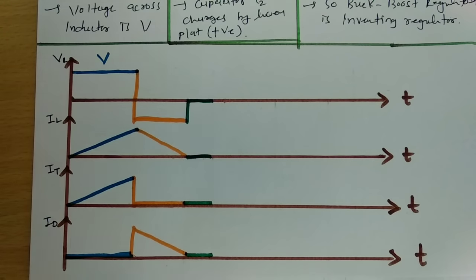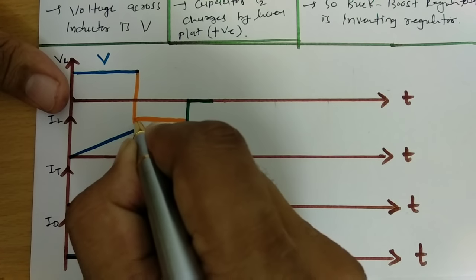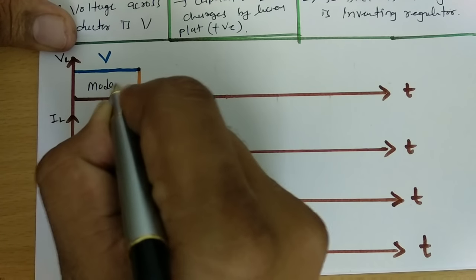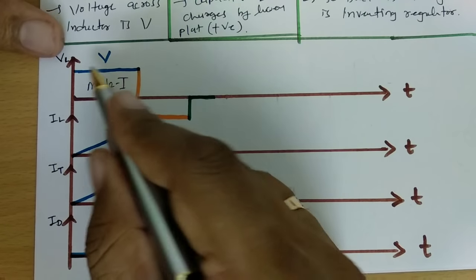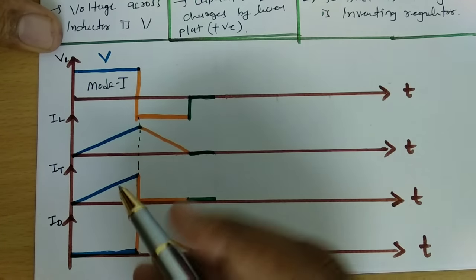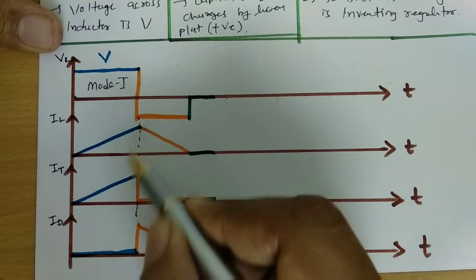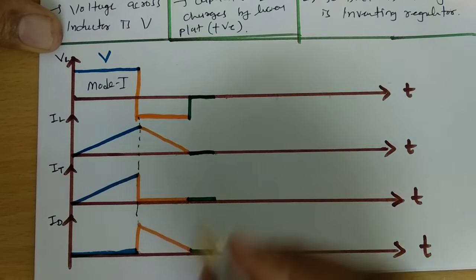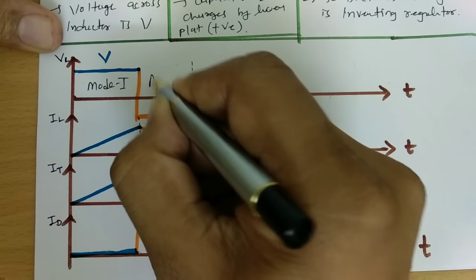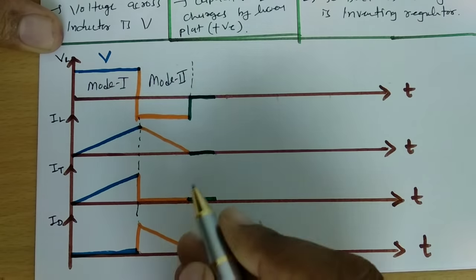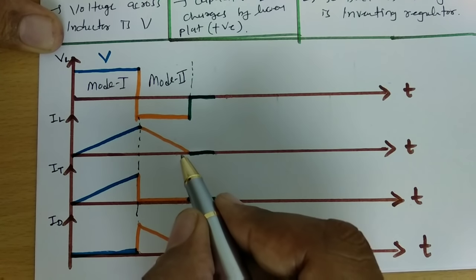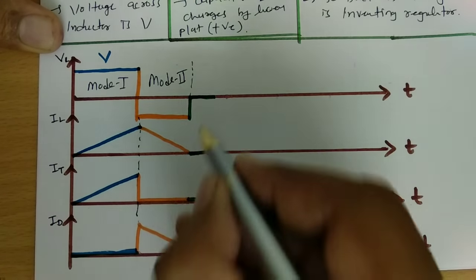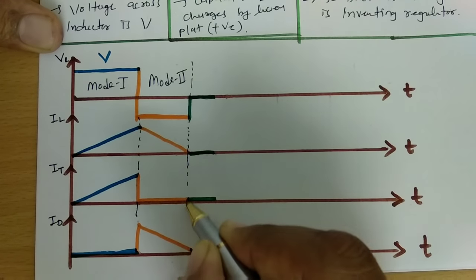To summarize: in mode one, voltage across the inductor is the input supplied voltage, inductor current increases, and switch current increases since inductor current equals switch current. The diode is off during that period. In mode two, the switch is off, the inductor discharges energy, switch current is zero, and the diode is on. The diode is on until inductor current drops to zero.